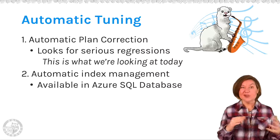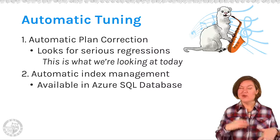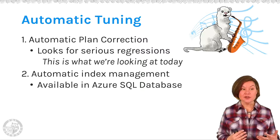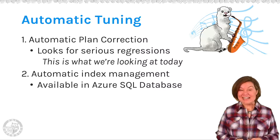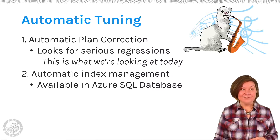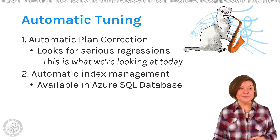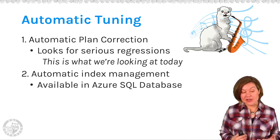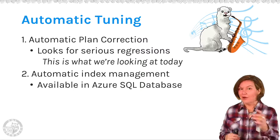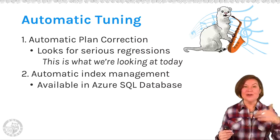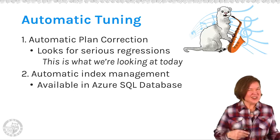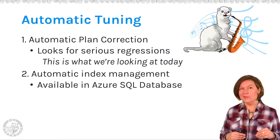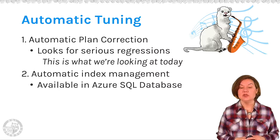It will then validate and make sure that the faster plan really is faster. So it has some intelligence about trying out this faster plan, and it is designed as a safety net to make sure your queries don't slow down forever. It's not going to prevent queries from ever getting slow because it has to notice they slowed down first, but then it can jump in and try to speed them up.